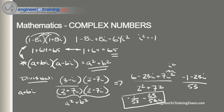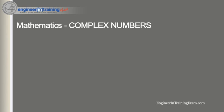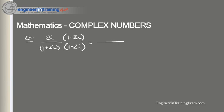Let's reinforce this with another division problem: 8i divided by (1 plus 2i). We multiply by the conjugate (1 minus 2i). The denominator becomes 1 squared plus 2 squared equals 5. Distributing 8i through the numerator gives 8i minus 16i squared. Simplifying with i squared equals negative 1, this comes down to 16/5 plus 8/5 i.